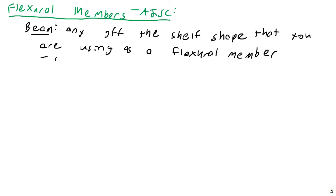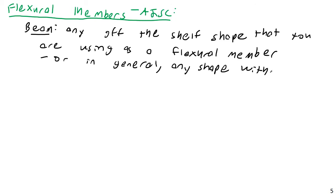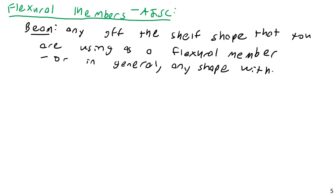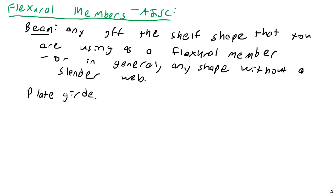In general, any shape without a very slender web falls under Chapter F beam design. The AISC also defines plate girders separately - plate girders are things that have very slender webs. They're often not even hot-rolled shapes like the kinds we usually talk about.